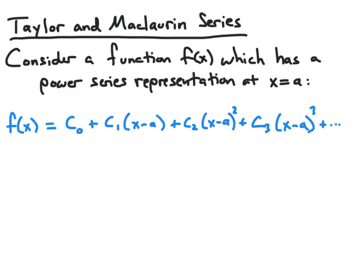Let's start by considering a function f of x, which we know has a power series representation at some number x equal to a. We can write that power series representation as f of x equal to c₀ plus c₁ times x minus a, plus c₂ times x minus a squared, plus c₃ times x minus a cubed, and so on. For each value of n, we have a coefficient cₙ multiplied by x minus a raised to the nth power.